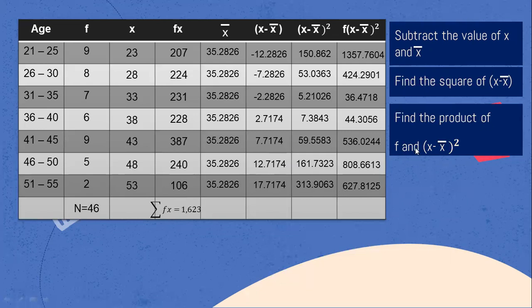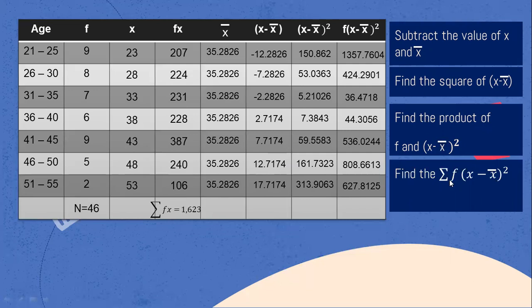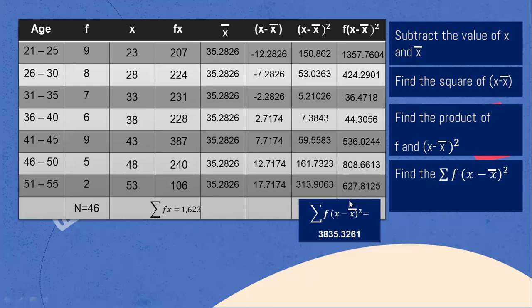Next step: find the summation of F multiplied by the square of the difference of X minus the mean. That is 1,357.7604 plus 424.2901 plus 36.4718 plus 44.3056 plus 536.0244 plus 808.6613 plus 627.8125. The summation equals 3,835.3261.